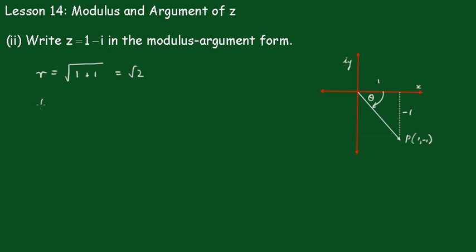Now, the argument, theta equals the inverse tan of minus 1 on 1. Now, remember the principal argument must lie between pi and minus pi. So, this is the angle we're after here. So, you must write that as minus pi upon 4, because we know the inverse tan of 1 is pi upon 4. So, the inverse tan of minus 1 is minus pi upon 4.